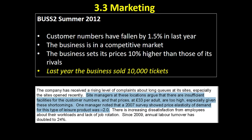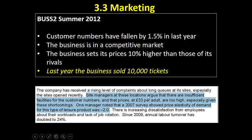This is a case study taken from the summer 2012 paper — the old AQA specification, used to be called Bus 2. Some of the information provided: customer numbers for this business have fallen by 1.5% in the last year; the business is competing in a competitive market; the business sets its prices 10% higher than those of its rivals. The price is £33 adult, and a 2007 survey showed price elasticity of demand for this type of leisure product was minus 2.0.